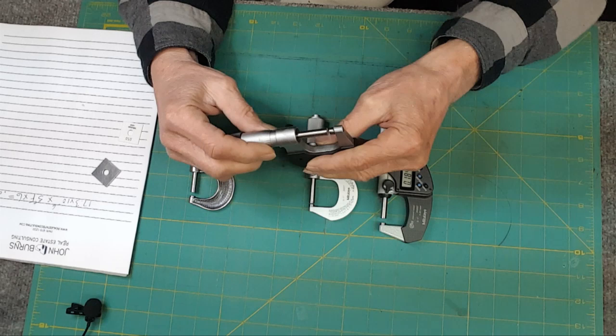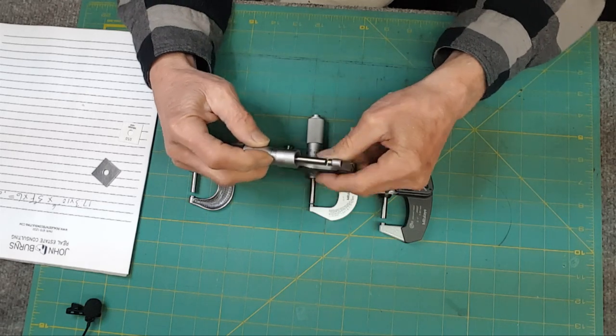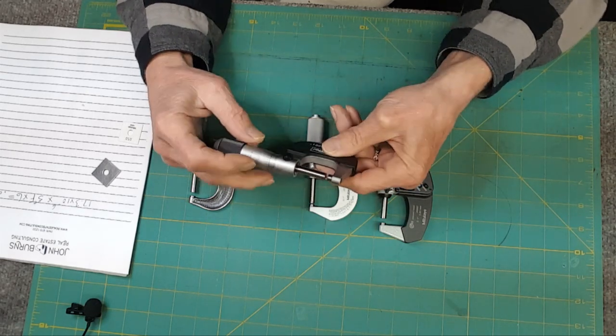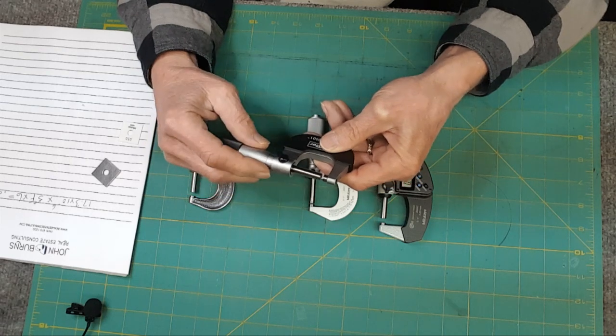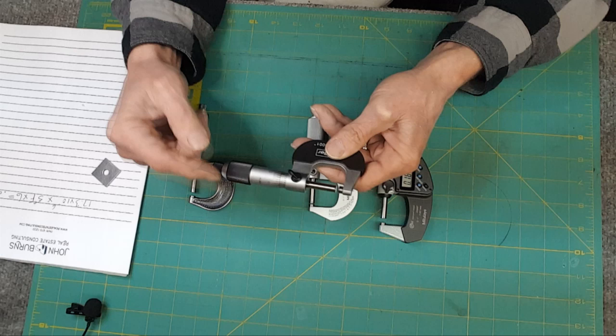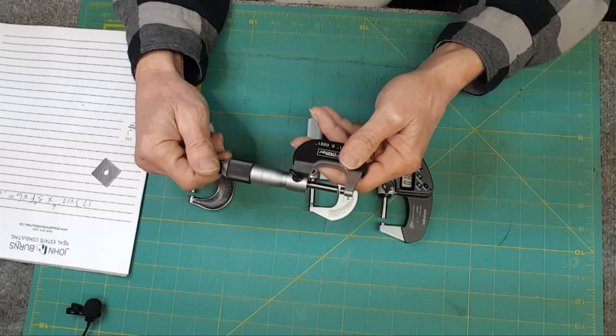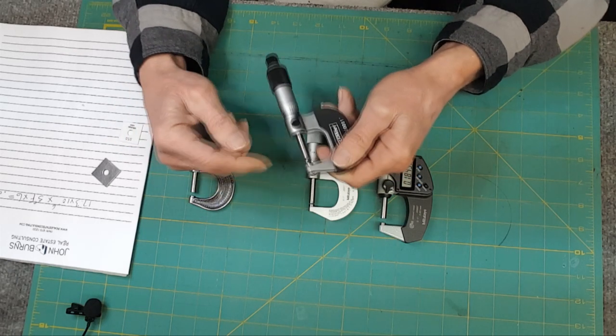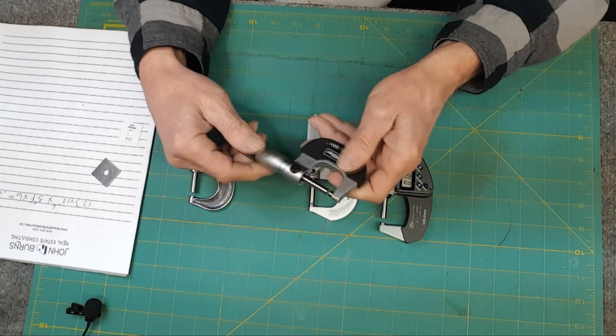Can you easily check a half a thou? Yeah, I did it earlier, and yes, you can clearly see that the line is in between the two one-thousandths marks. So you can get to a half a thou with this, and you can probably start guessing into tenths. So that's real cheap. This guy, I think it was like $50.